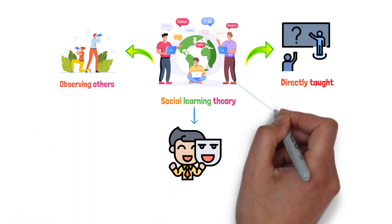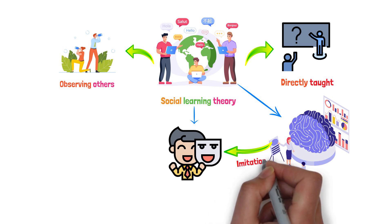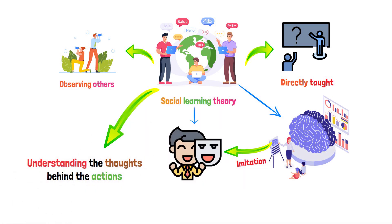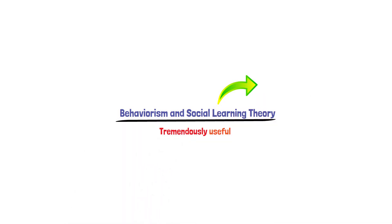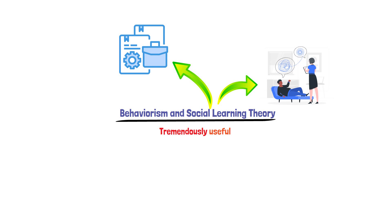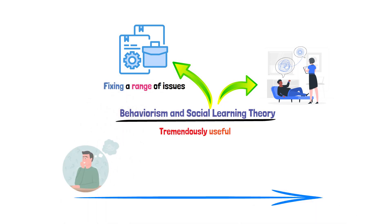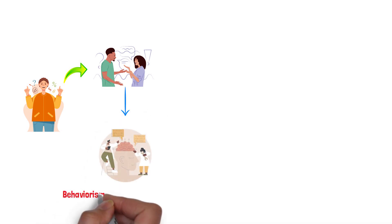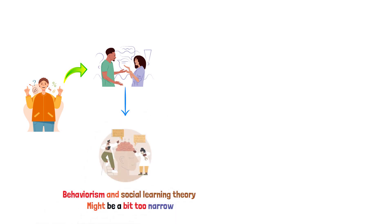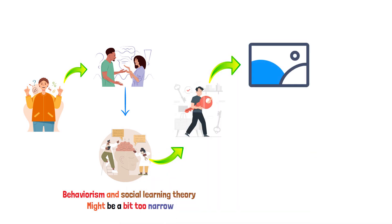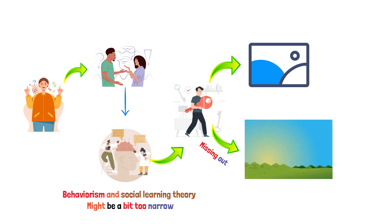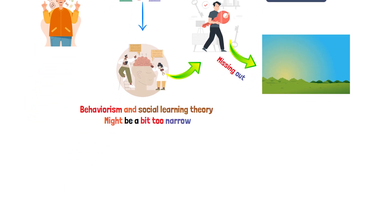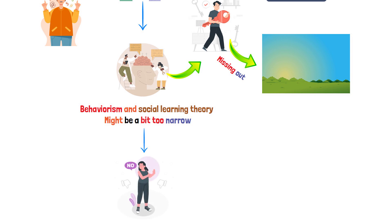The latest twist is the role of cognition — it's not just imitation, but understanding the thoughts behind the actions. Both theories have been tremendously useful, especially in behavior modification, serving as a psychological toolkit for fixing a range of issues, from nail-biting to more severe behavioral challenges. However, no theory is perfect. Critics argue that both behaviorism and social learning theory might be too narrow — like looking through a keyhole, you see part of the picture but miss the broader landscape of environmental influences. There's also the argument that these theories don't give enough credit to people's ability to shape their own development. After all, we're not just passive recipients of environmental influences — we're active participants in our own growth story.